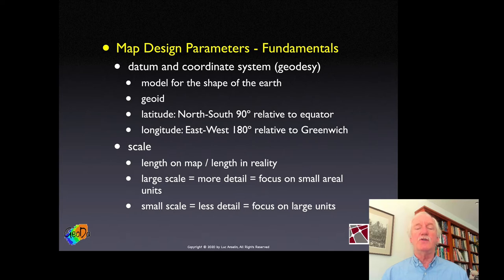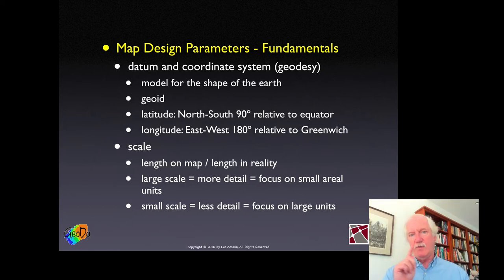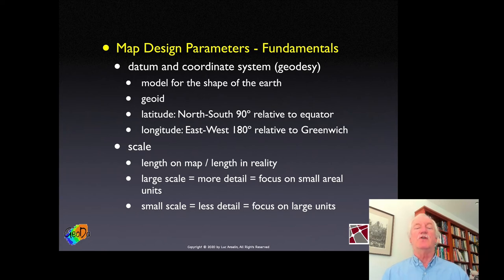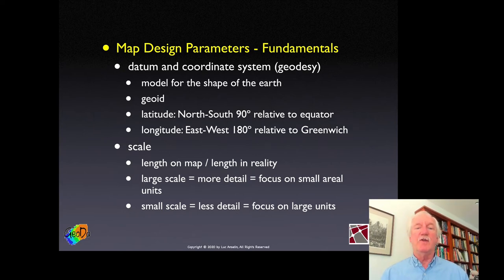Northern latitudes are positive degrees, southern latitudes are negative, from 0 to 90. Longitude, for some historical accident, is measured relative to the Greenwich meridian — Greenwich being in London. East of the meridian, going from 0 to 180, is positive. West of the meridian, going from 0 to 180, is negative. Since the US is north of the equator and west of London, the latitude is positive and the longitude for US locations will be negative.